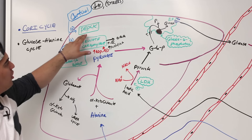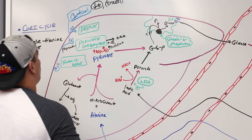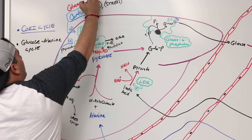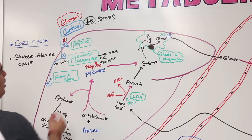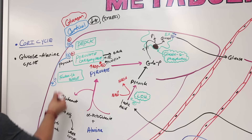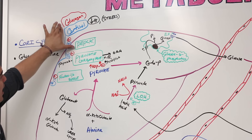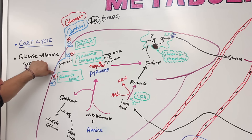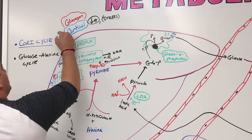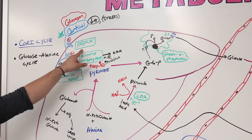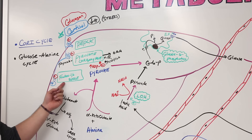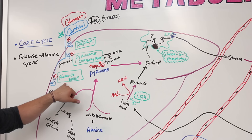Cortisol is the primary regulator leading to synthesis of PEPCK, pyruvate carboxylase, and fructose-1,6-bisphosphatase. Glucagon is another hormone that also helps in this process — it assists in the synthesis of PEPCK, pyruvate carboxylase, and fructose-1,6-bisphosphatase, and can even help with phosphorylation of fructose-1,6-bisphosphatase. But if you had to remember the more important one, remember cortisol.